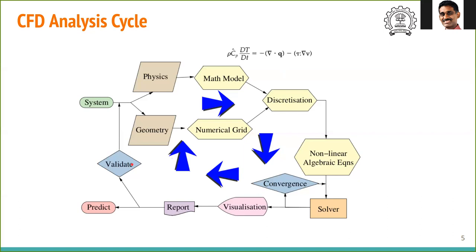We do validation with some known value, or there might be previous results people have reported, or experiments we can simulate. Once validation is done, we modify the physics, include new physics, or modify the geometry, then go through the entire process again to get your prediction.